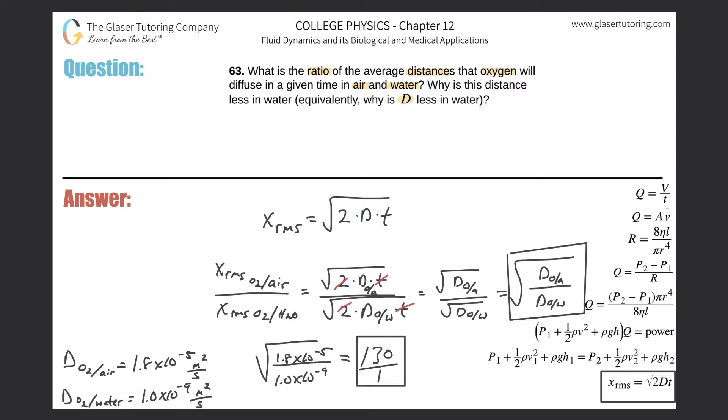What this means is essentially - you can always put this over 1 - the root mean square distance or the average distance that the oxygen molecule will travel in air is going to be 130 times larger than the distance the oxygen will travel in water.